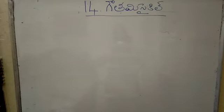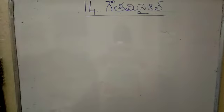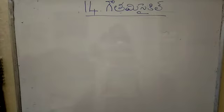In every lesson, they give one-word gunintamu words: thalakattu, dheergamu, gudi, gudi dheergamu, kommu, kommu dheergamu, eithwam, eithwam dheergamu, aithwamu, and avutwamu. They gave these in lesson number 14, gautami cycle.